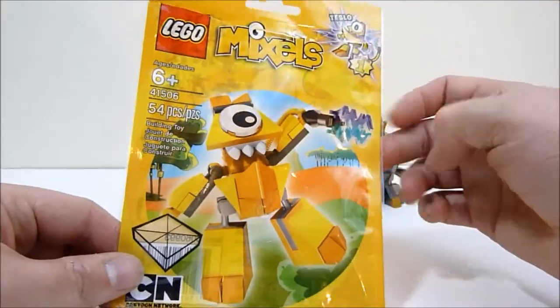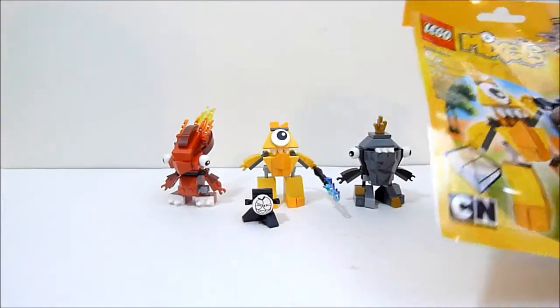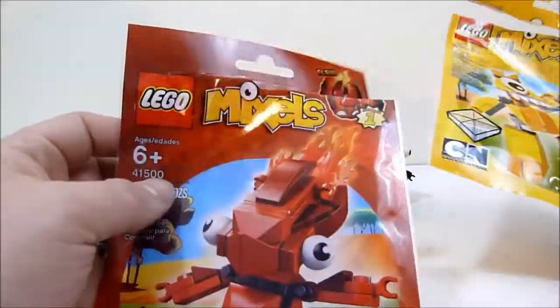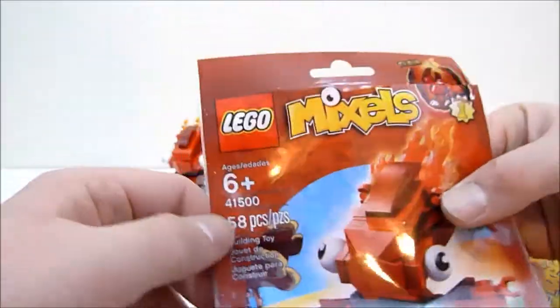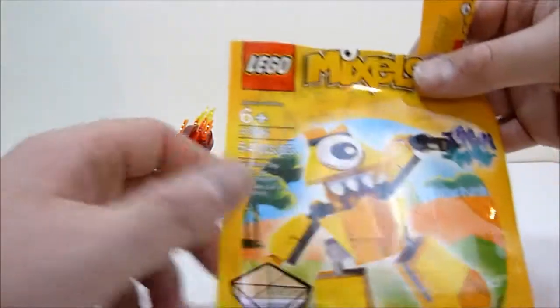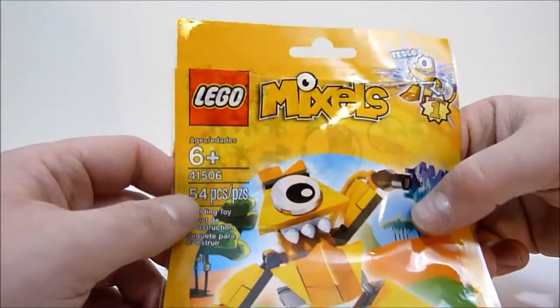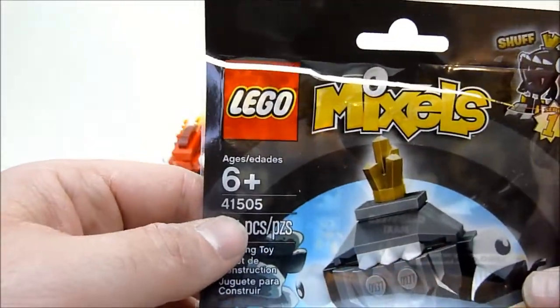They have a picture of the guy on the package. For reference, this red guy over here is Flain from Series 1, set number 41500. This dude right here is Teslo, 41506, and this little guy over here is Shuff, 41505.